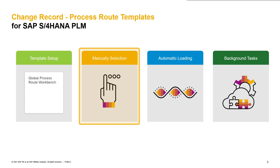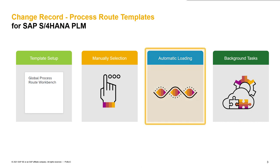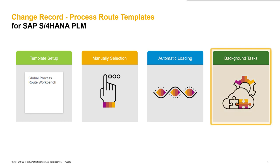These templates can later be used for manual selection on the change record or for automatic loading. Manual selection is handled on the process route section of our change records, and you can also maintain additional work items on top of predefined process route templates. To automatically load process routes, a setup in BF+ is necessary. We have two options: loading on a status change, or automatic template loading when adding a change item. In addition, we also have the possibility to maintain background tasks on process routes — for example, to execute a change record status switch.